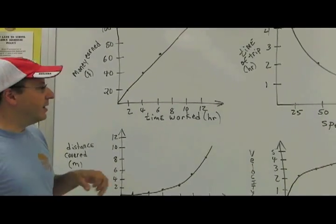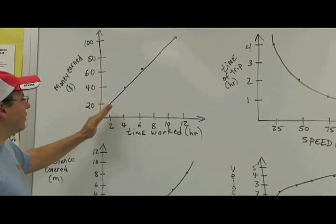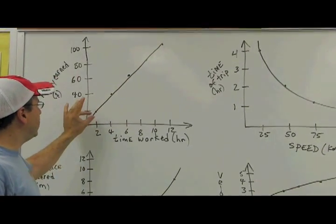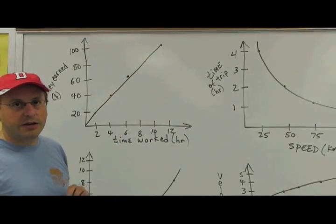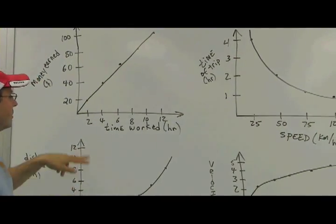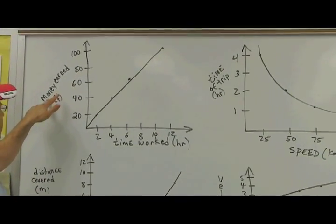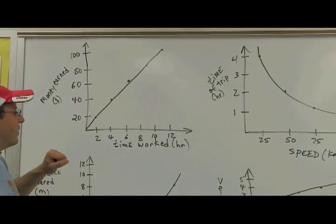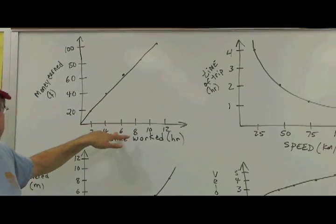A linear graph goes up at a constant rate, so you can see it climbs in equal increments the entire time. The slope of this graph stays constant. So this graph is telling me that my money earned versus my time worked goes up in a linear fashion. If I double the amount of time I work, I double the amount of money that I earn.